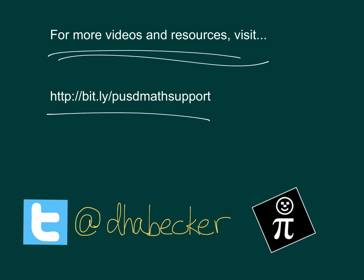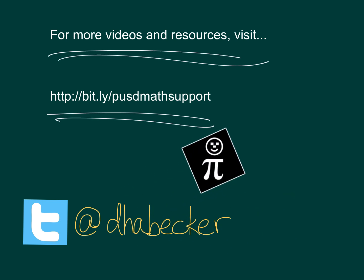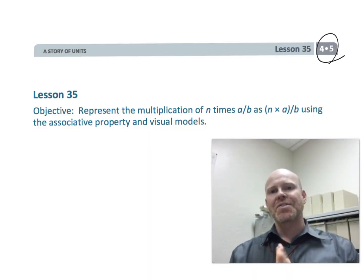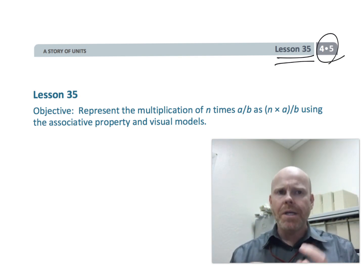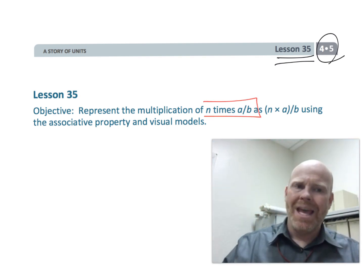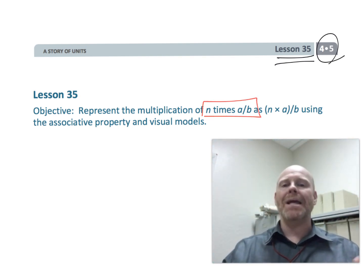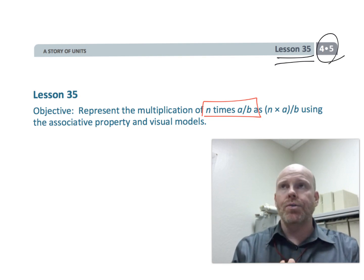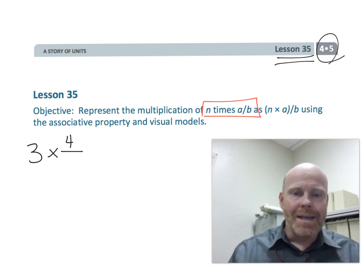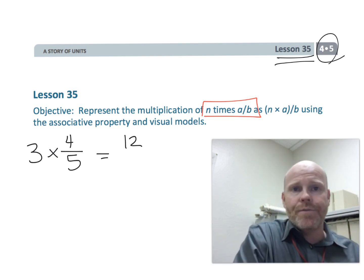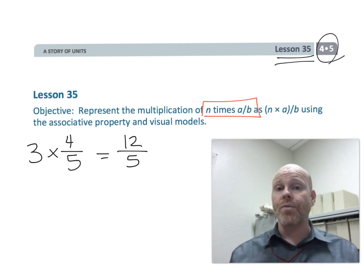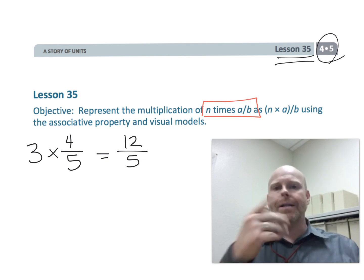This is fourth grade Module 5 Lesson 35. In this lesson, students are going to learn about the concept of n times a over b — what does that mean? Basically, students are going to learn how to do three times four-fifths and get twelve-fifths. It's not just a rule; we're going to teach for understanding and represent it in a variety of ways.